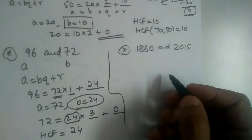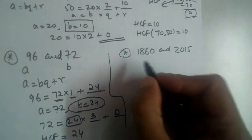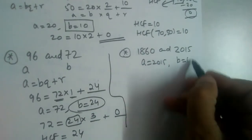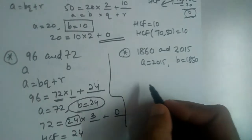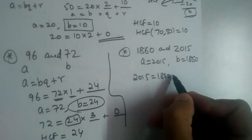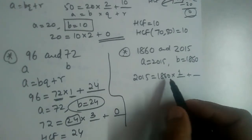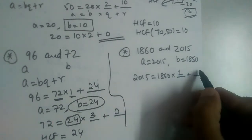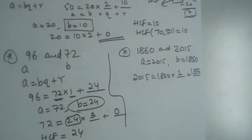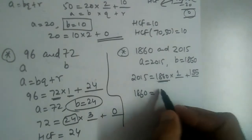We have one more question: 1860 and 2015. Pause the video and try it. Here a is 2015 and b is 1860. So 2015 is equal to 1860 into 1 plus 155, since 1860 ones are 1860 and the remainder is 155.